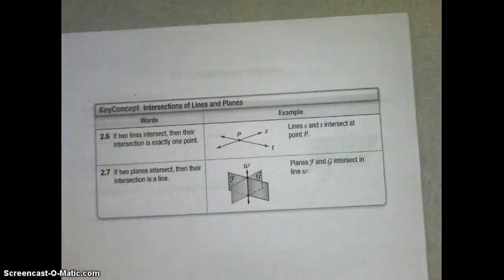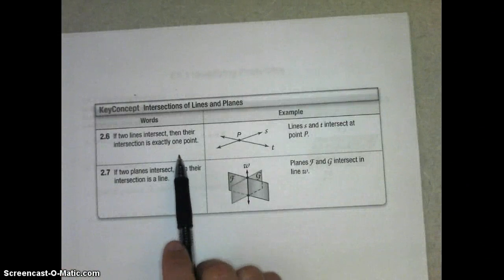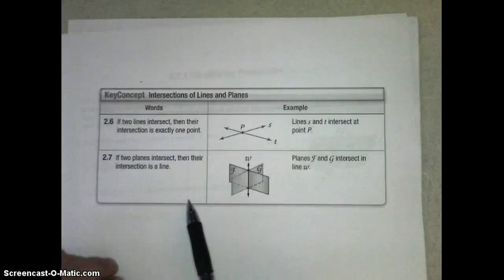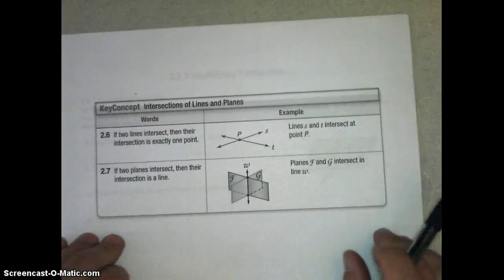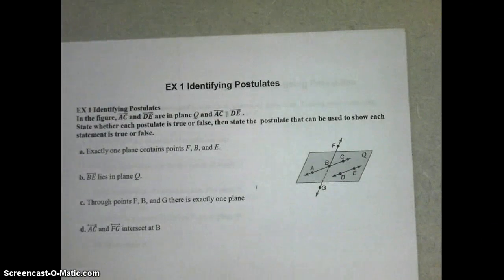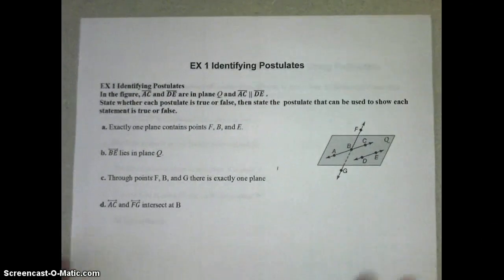Then our last two postulates: if two lines intersect, then their intersection is exactly one point. And 2.7, if two planes intersect, then they intersect in a line. So we're going to use these postulates, which are these mathematical ideas that do not have to be proven to be true. They just are accepted as true without proof.